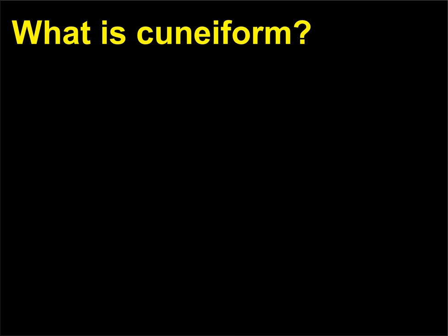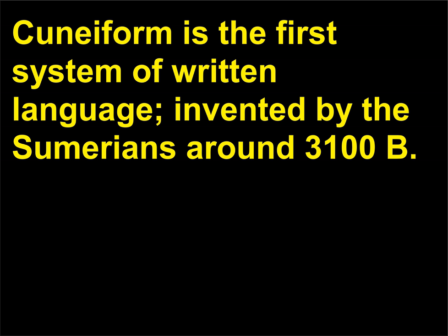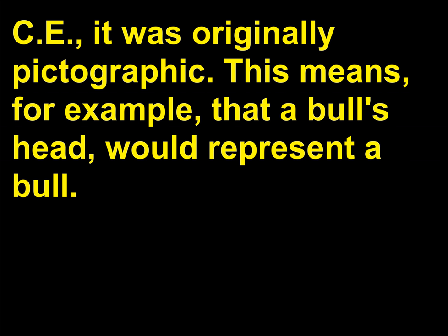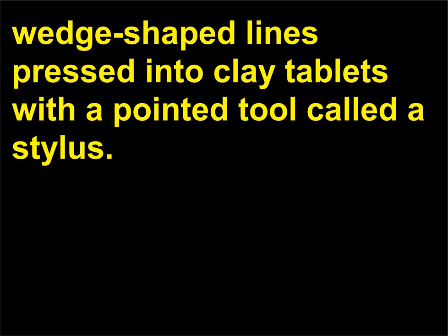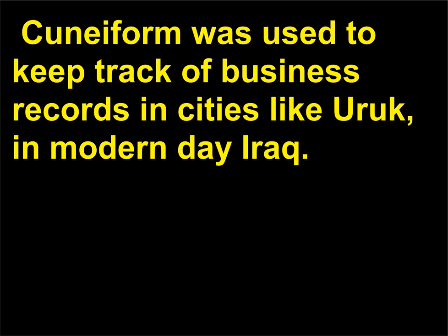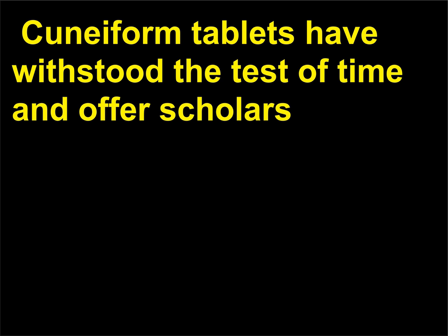What is cuneiform? Cuneiform is the first system of written language, invented by the Sumerians around 3100 BCE. It was originally pictographic — meaning, for example, that a bull's head would represent a bull. Over time, cuneiform evolved into a more abstract system of signs consisting of wedge-shaped lines pressed into clay tablets with a pointed tool called a stylus. Cuneiform was used to keep track of business records in cities like Uruk in modern-day Iraq. Cuneiform tablets have withstood the test of time and offer scholars a wonderful window into the culture of the ancient Near East.